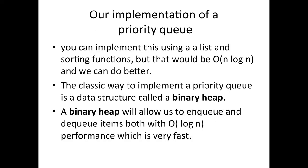So how are we going to implement this? We could use a list — putting everything in the list takes O(N) time, and sorting it takes O(N log N). That's not bad, but it turns out you can do a lot better. A classic way to implement a priority queue is a data structure called a binary heap. A binary heap will allow us to enqueue and dequeue items in O(log N) time, which is really efficient. We can put a new item into the line and take someone out in log N time, so the performance will be very fast.